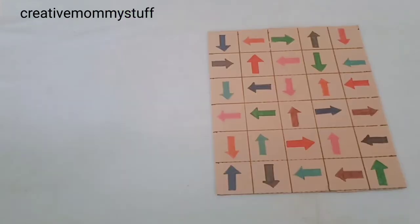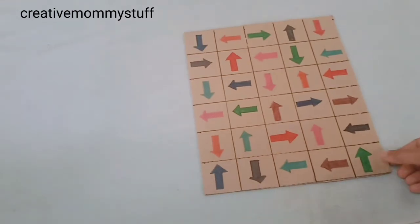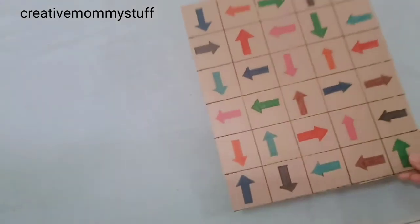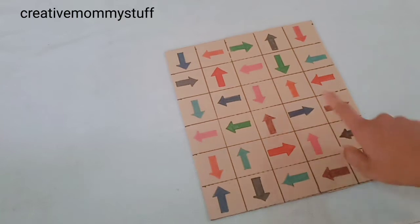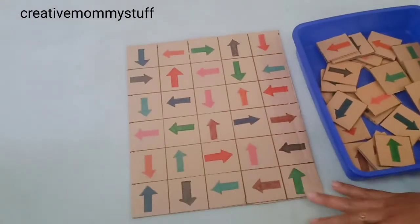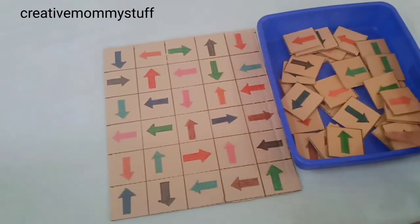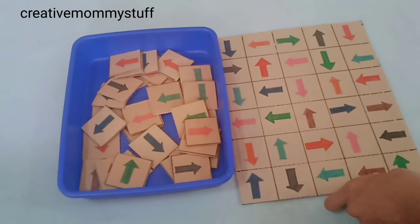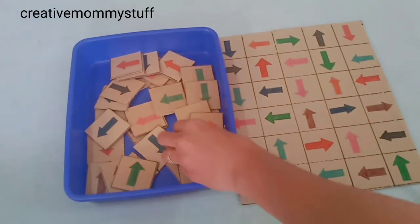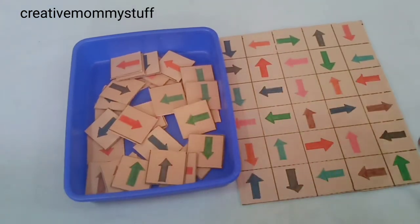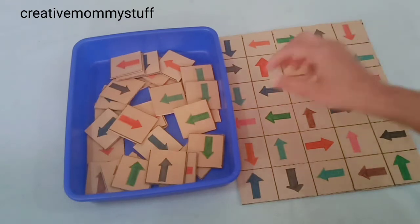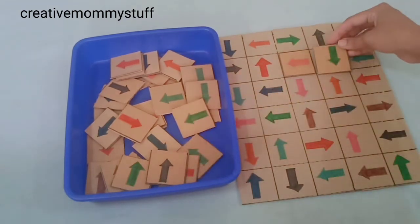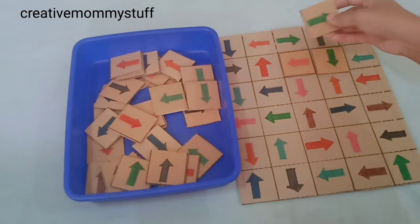For the next activity, here I have made this DIY sheet, and I have drawn different colored arrows. Again, here I have these pieces, so the kid has to match the arrow along with the color. This is pink, so pink left, green down. So like this they have to go on matching.